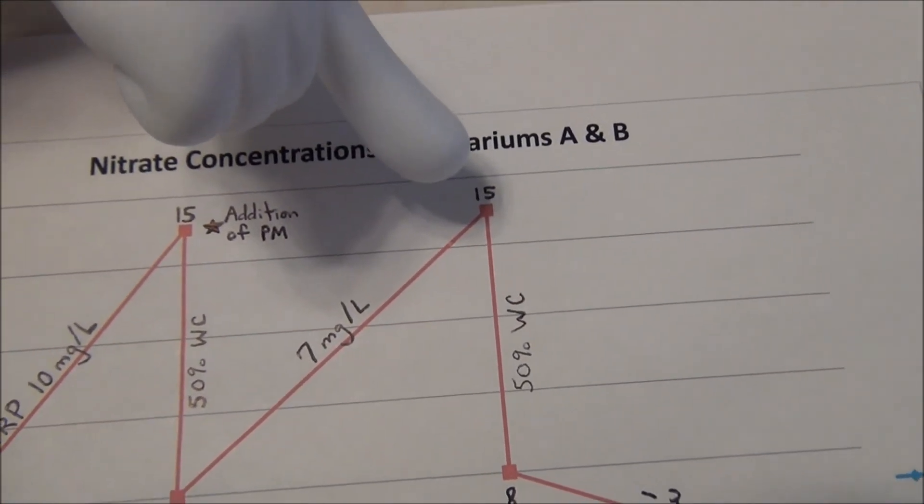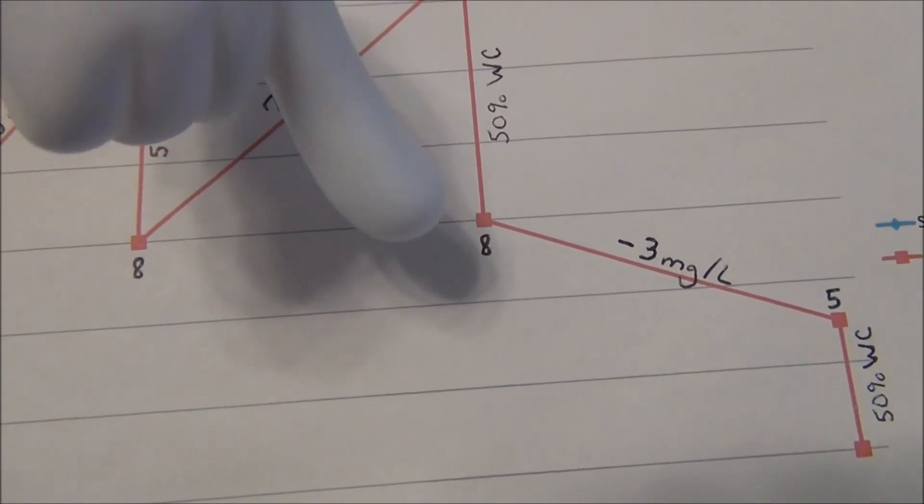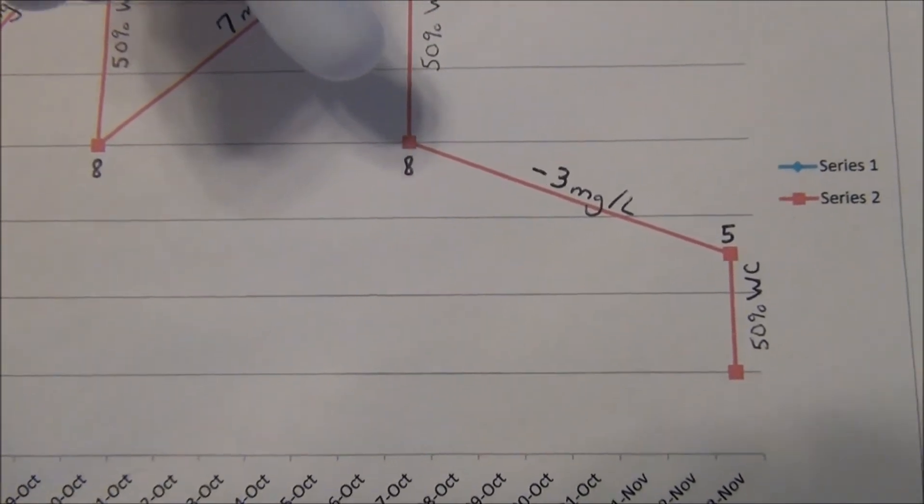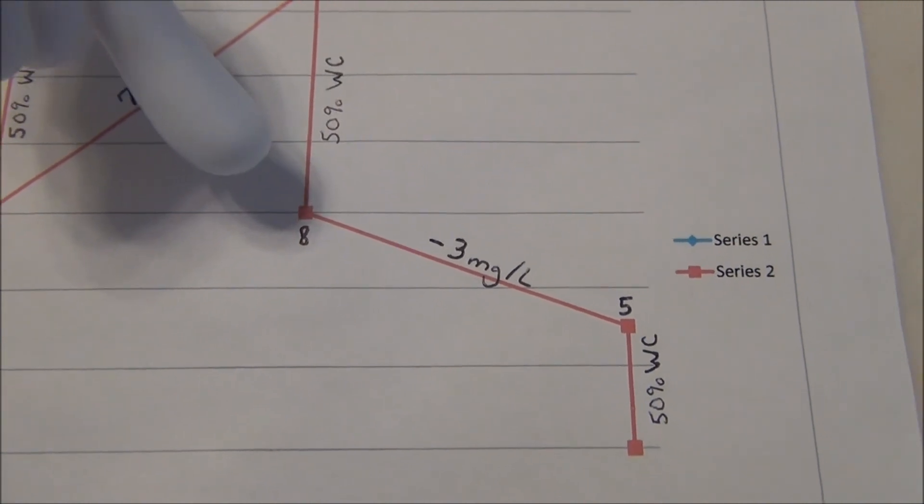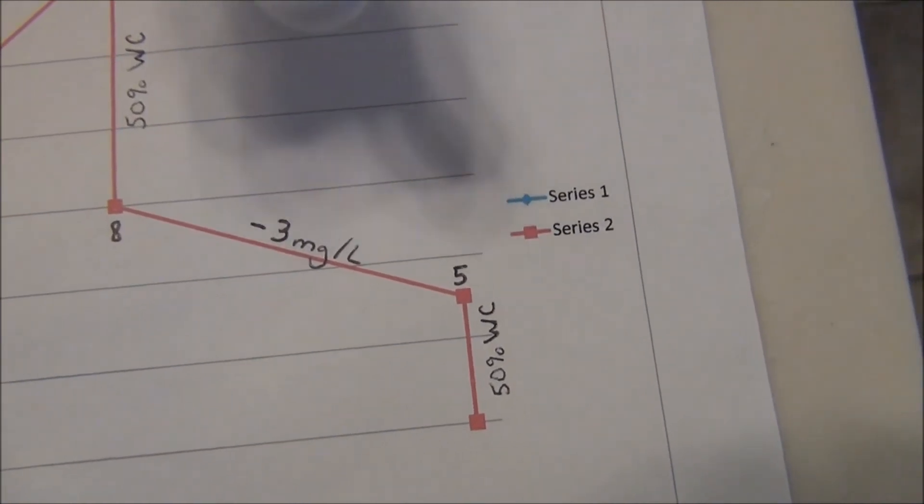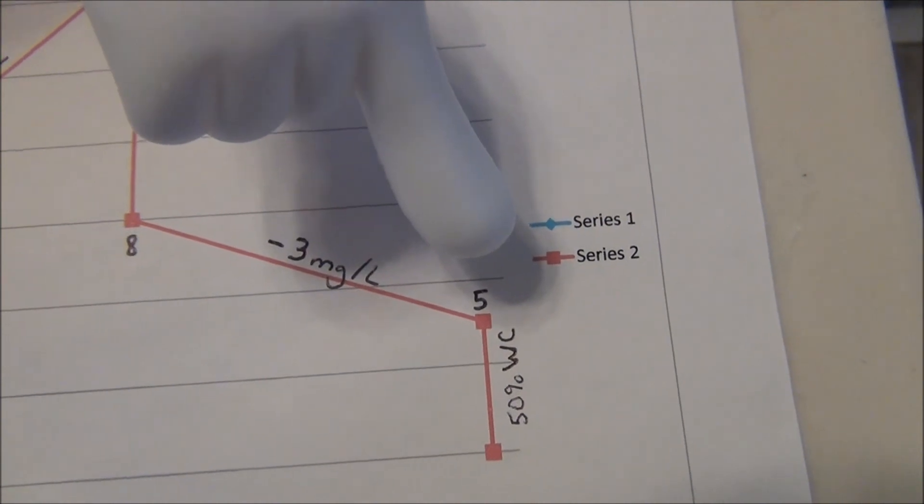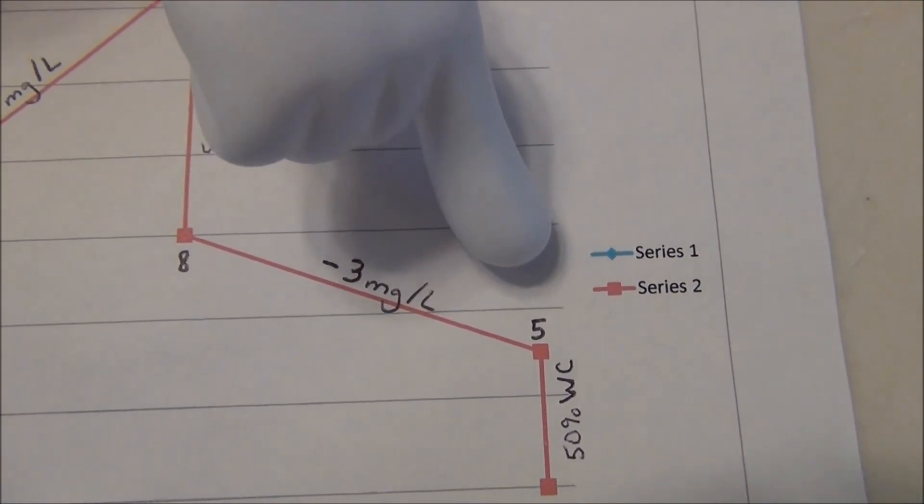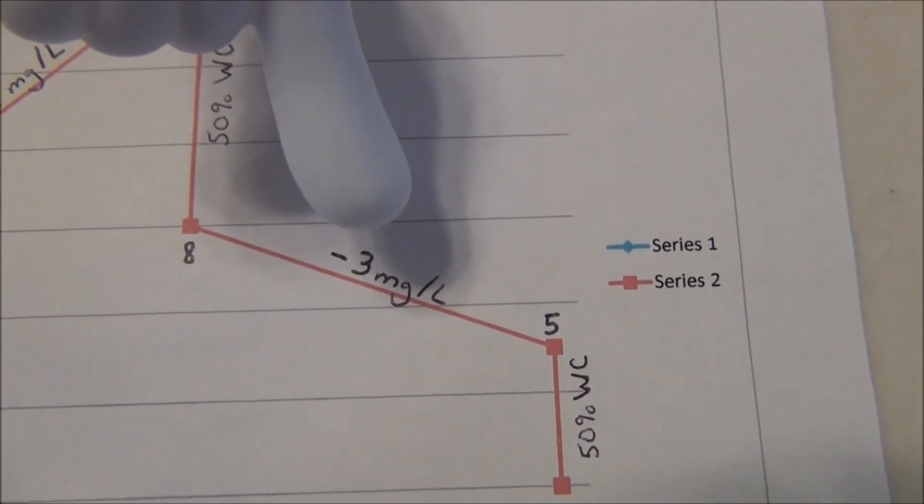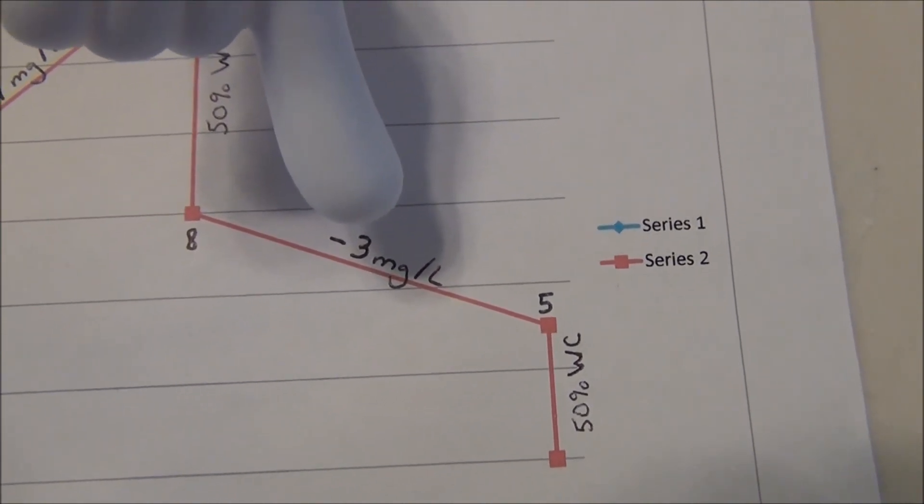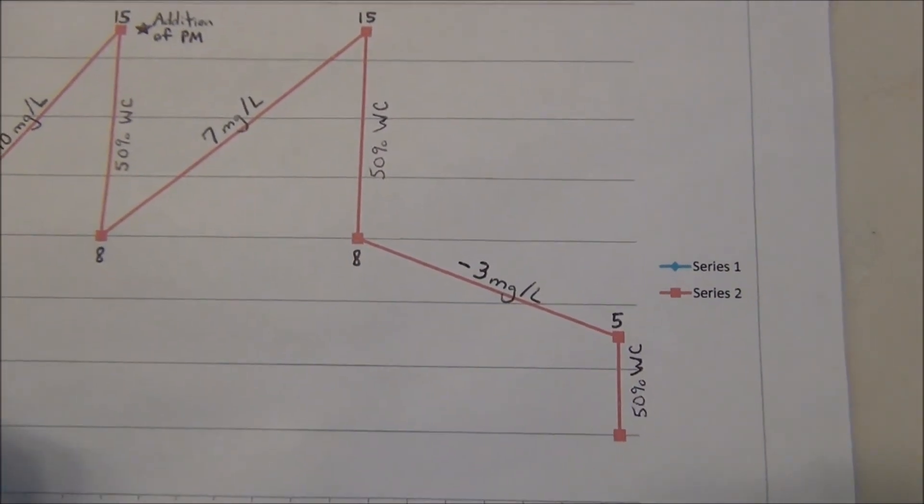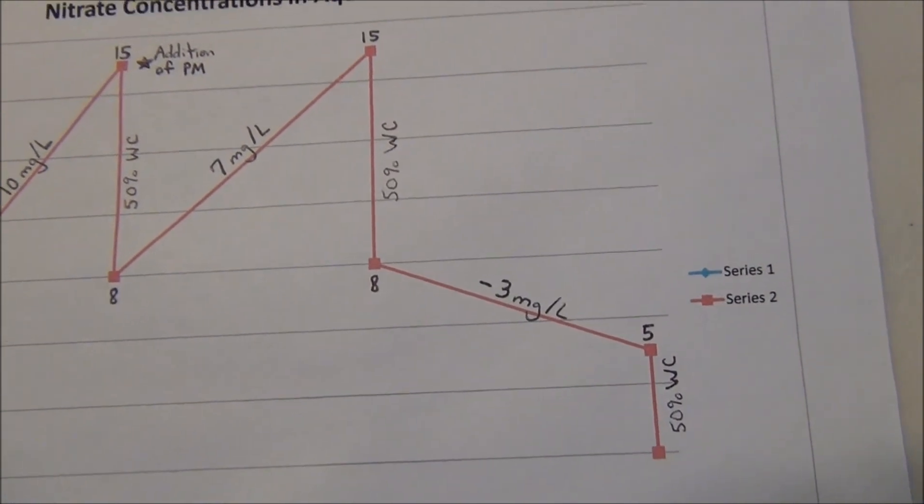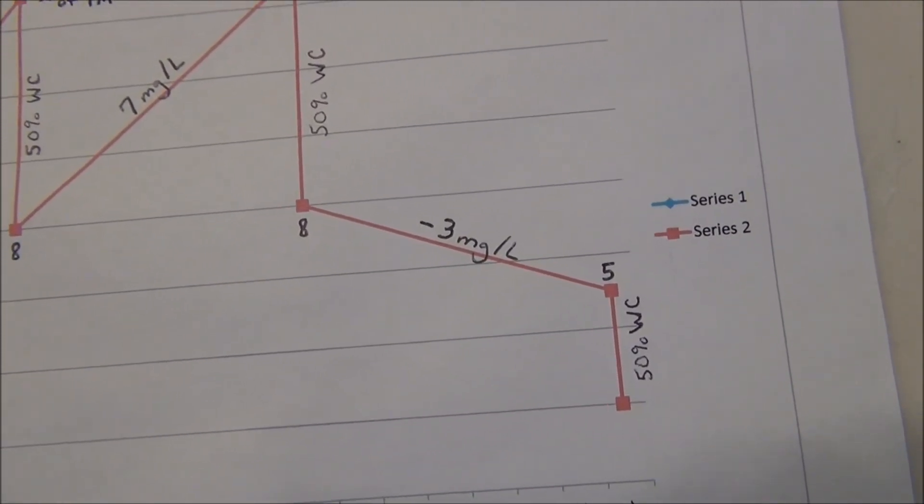After the test of 15 milligrams per liter, we conducted another 50% water change. The results were 8 parts per million or milligrams per liter on each aquarium. Then we allowed one more week this past week to go by without conducting any water changes. We conducted two nitrate tests, one on each aquarium this morning, and the results were 5 milligrams per liter. They were 8 at the end of the water change last Sunday, and today they're 5. So the concentrations were lowered by 3 milligrams per liter. The pond matrix is removing the weekly rate of production of 10 milligrams per liter, as well as an additional 3 milligrams per liter. So the pond matrix is removing 13 milligrams per liter on a week-to-week basis from this past week.